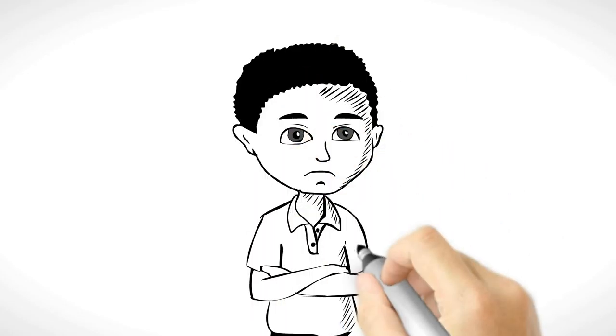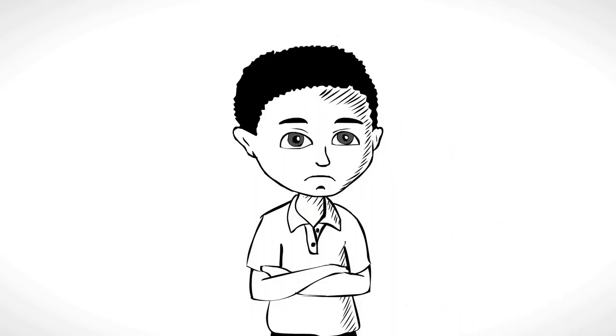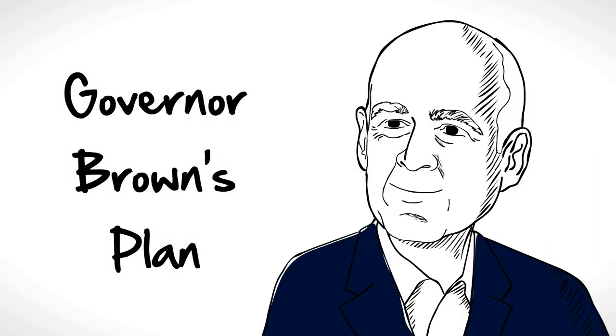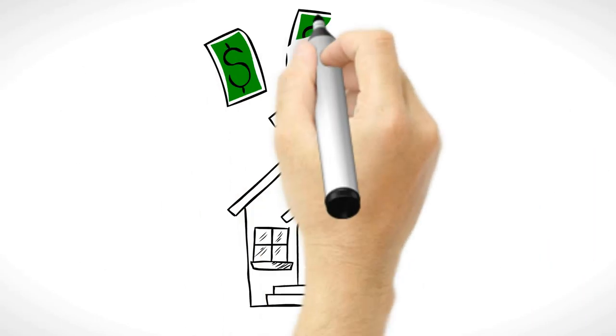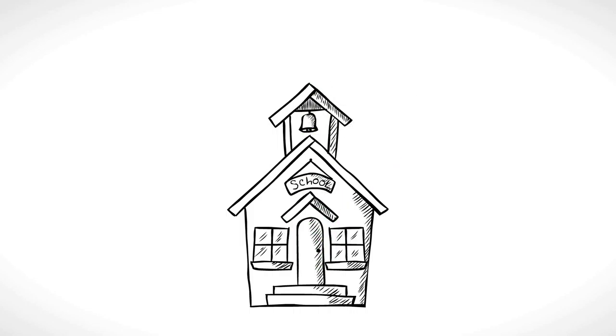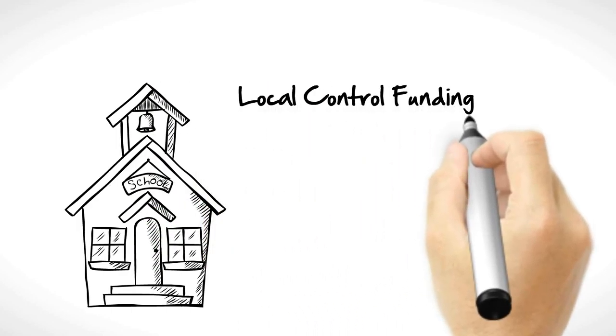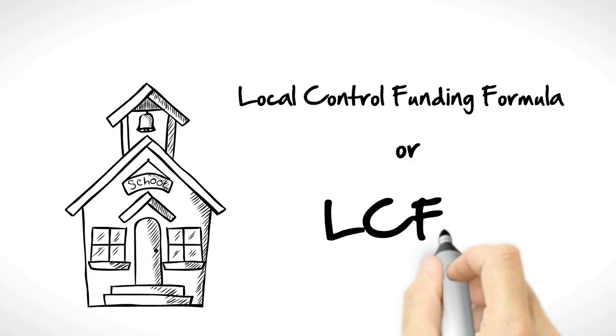This is not fair. This is not right. We can do better. The governor has a plan to fix these funding problems. He wants to improve the way we fund schools. The plan is called Local Control Funding Formula, or LCFF.